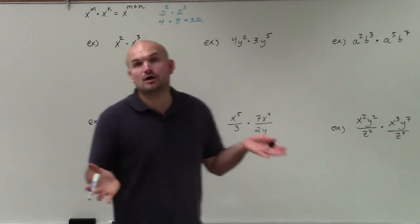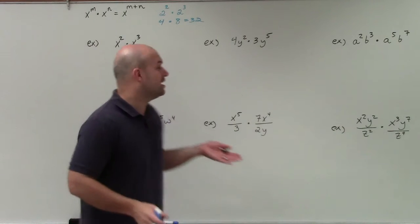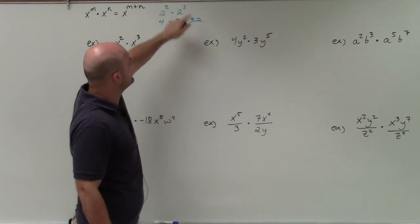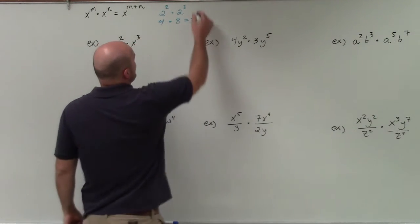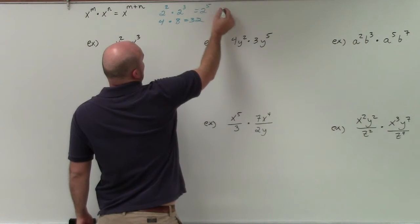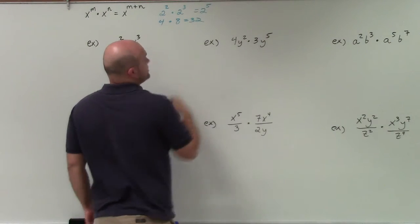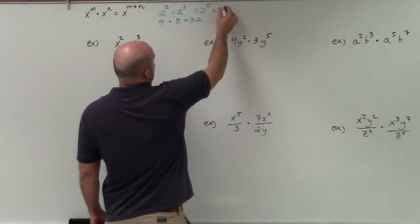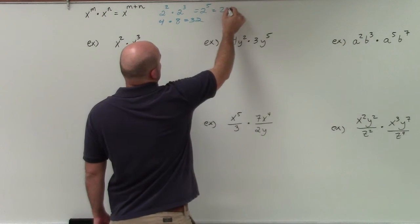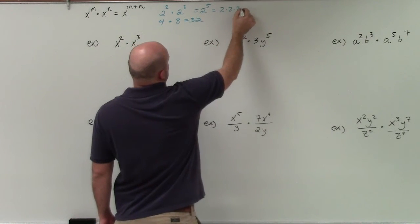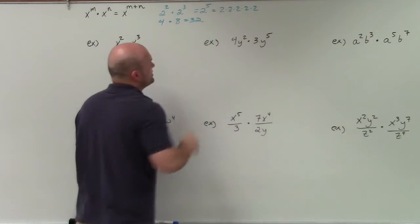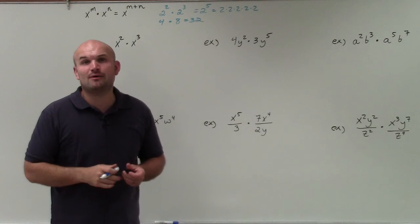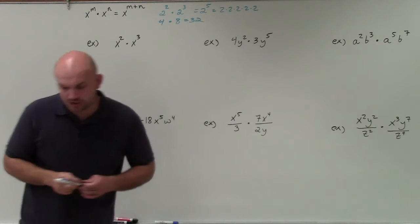If we follow our understanding of the product rule, 2 squared times 2 cubed is going to equal 2 to the fifth power, which is 32. We can justify that result as 2 times 2 times 2 times 2 times 2, which again gives you 32. So you can see that the product rule works.